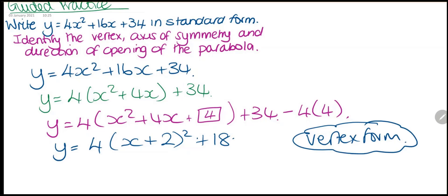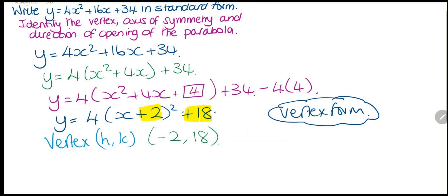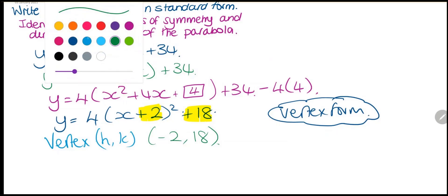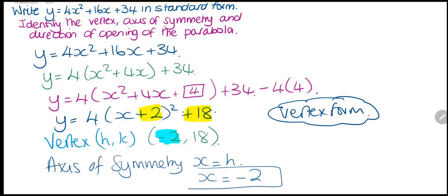From vertex form we can find the vertex. This is (h, k). Since we have (x + 2), h is the opposite, so h = -2. And k = 18. So the vertex is at (-2, 18). For the axis of symmetry, x = h, so x = -2. The axis of symmetry is the line x = -2.